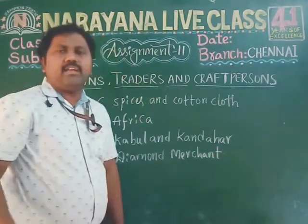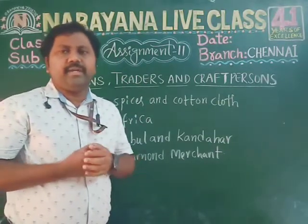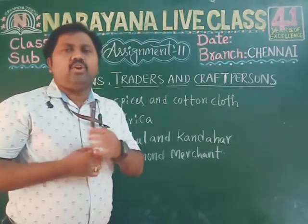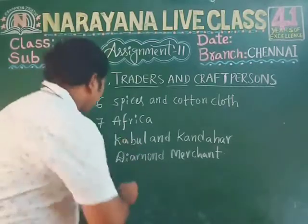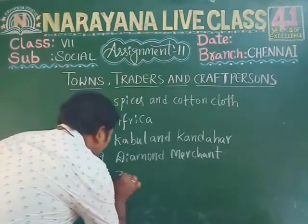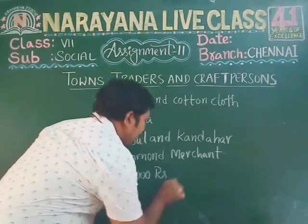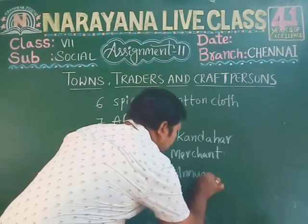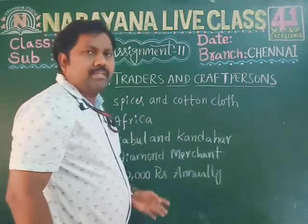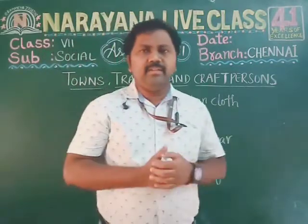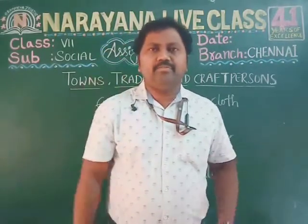Tenth question: what is the total amount estimated by Jean Baptiste Tavernier at Kabul? The answer is 30,000 rupees annually. These are the 10 question answers related to this assignment. I hope you are clear with these answers. Thank you so much, have a great day!